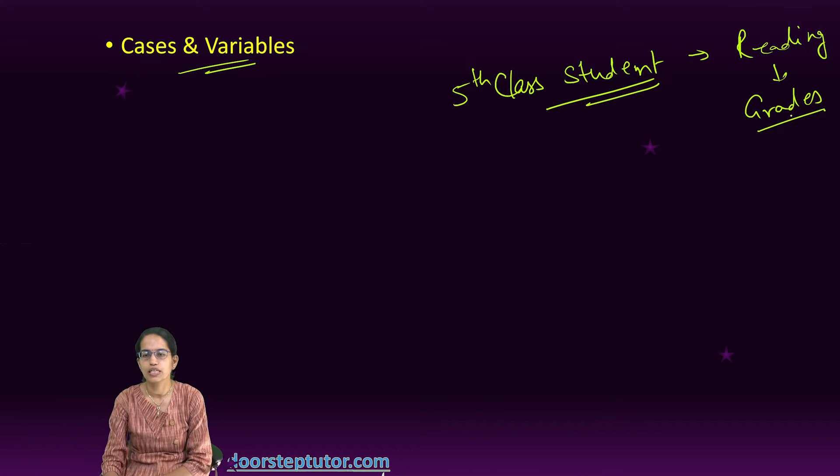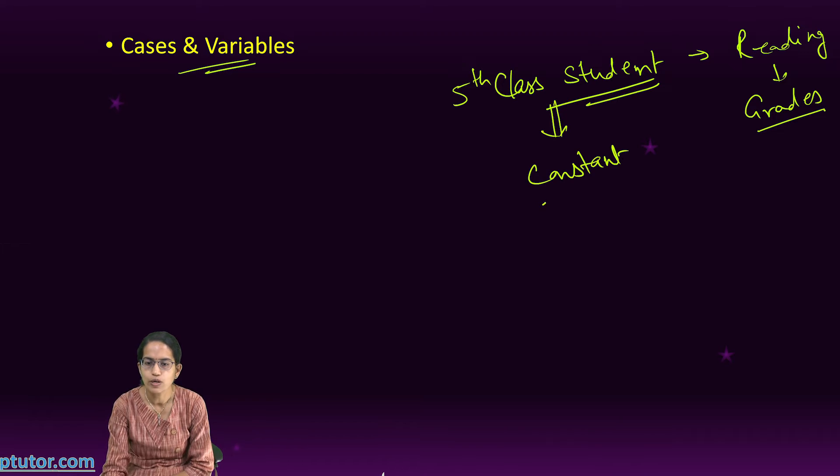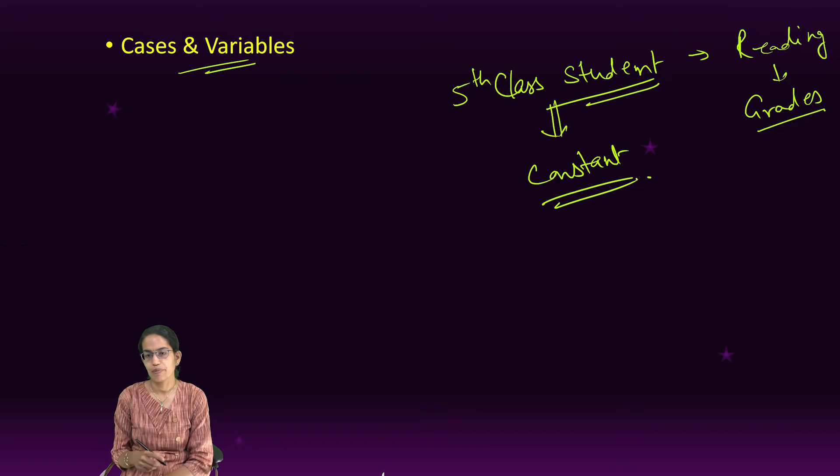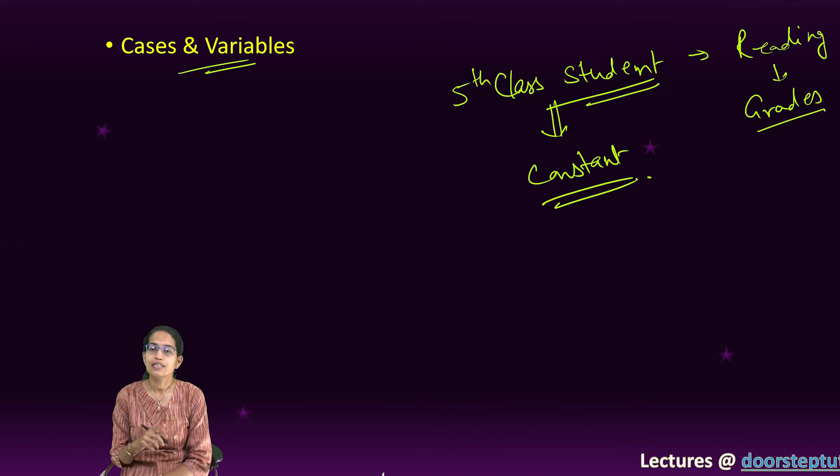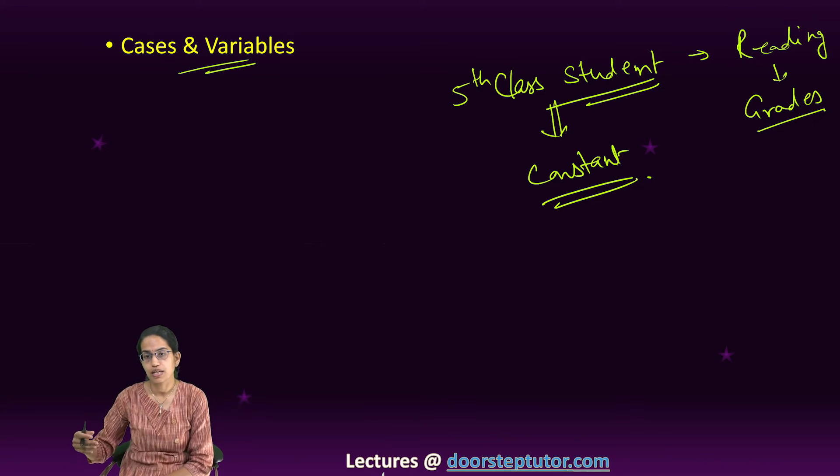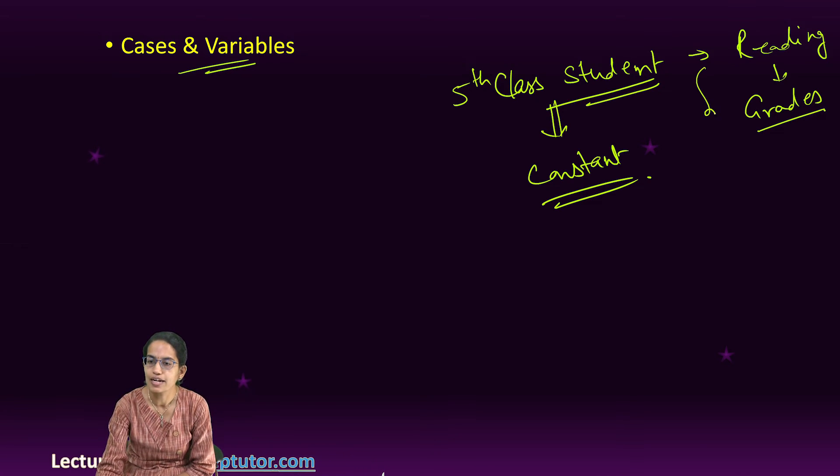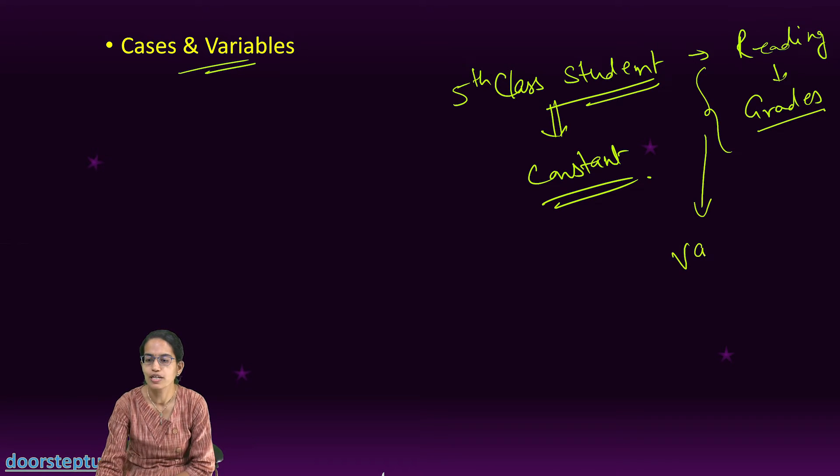So this fifth class student is the constant. Now what is the variable? Variable is the reading hours—probably some of them would be reading for two hours, others would be reading for 10 hours. And grade—some would get A grade, others would get B, others would get C. So both reading and grades become variables.